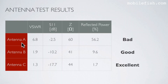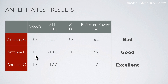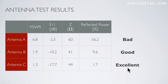Here are the antenna results. Antenna A has a VSWR of 6.8, meaning 56% of the input power is reflected back — this is a bad antenna. Antenna B has a VSWR of 1.9 and 9.6% reflected power — this is still considered a good antenna. Antenna C has a VSWR of 1.3 with only 1.7% of the input power reflected back — this is an excellent, well-tuned antenna.